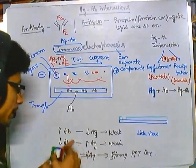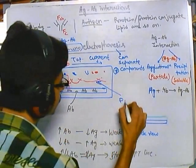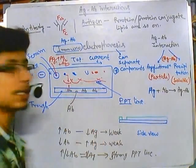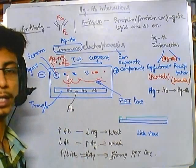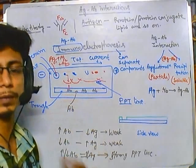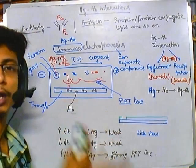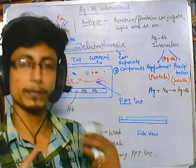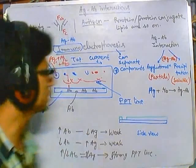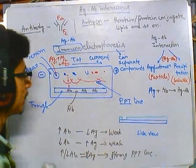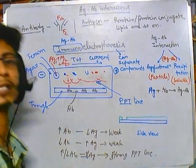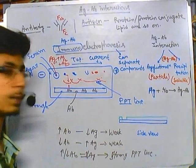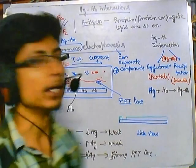The precipitin lines tell us whether something abnormal exists by comparing with a standard normal person's serum. Using this technique we can also isolate components from a crude mixture — separate them out using electrophoresis, then use the diffusion method to get our desired result. This is the process of immunoelectrophoresis and it is used in many disease treatment and diagnosis centers.